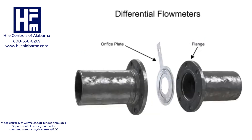The differential flow meter, whether Venturi tube, flow nozzle, or orifice plate style, is an inline instrument that is installed between two pipe flanges.